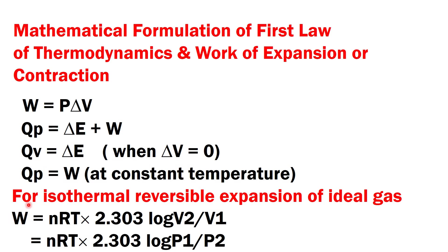Now, the formula for work done in isothermal reversible expansion of an ideal gas: W = nRT × 2.303 × log(V2/V1), where n is the number of moles, R is the universal gas constant, and T is temperature in Kelvin. Alternatively, we can write W = nRT × 2.303 × log(P1/P2), using initial pressure divided by final pressure. Let's now apply this formula and solve the problems.